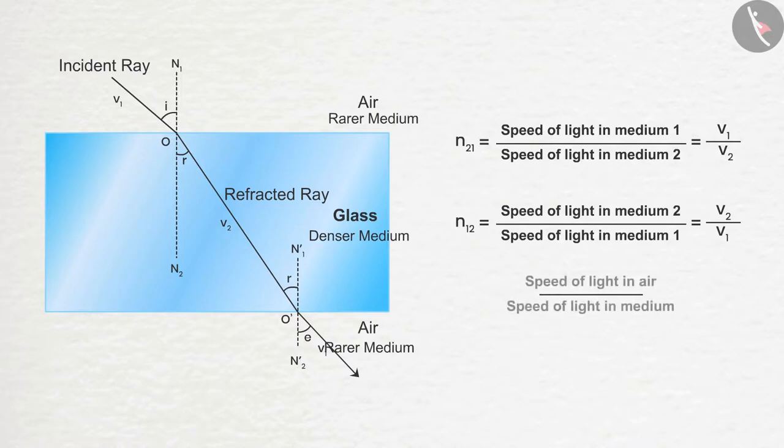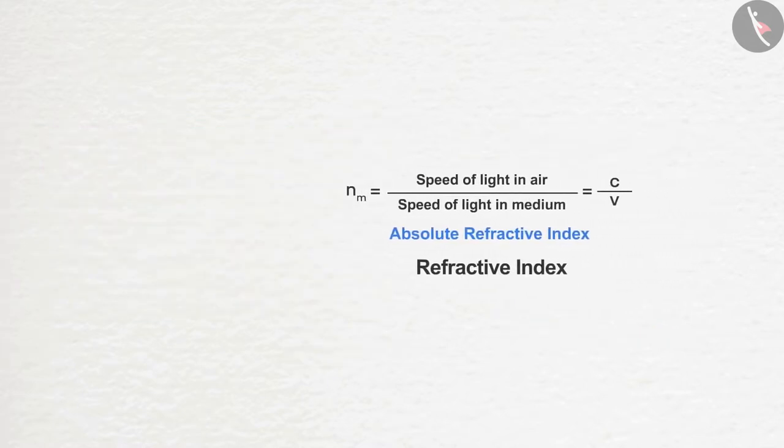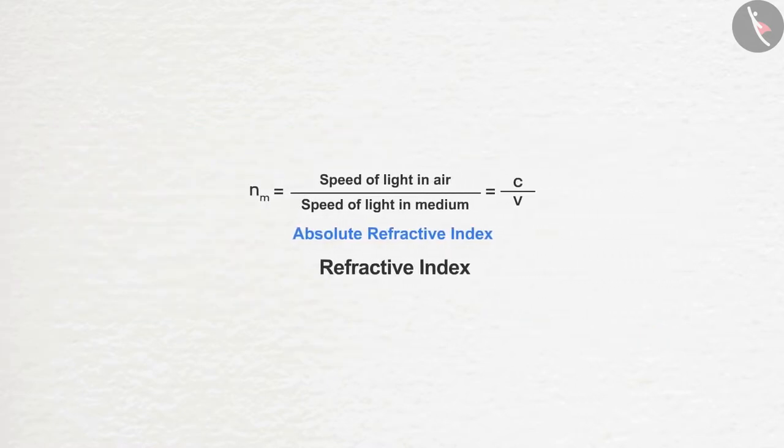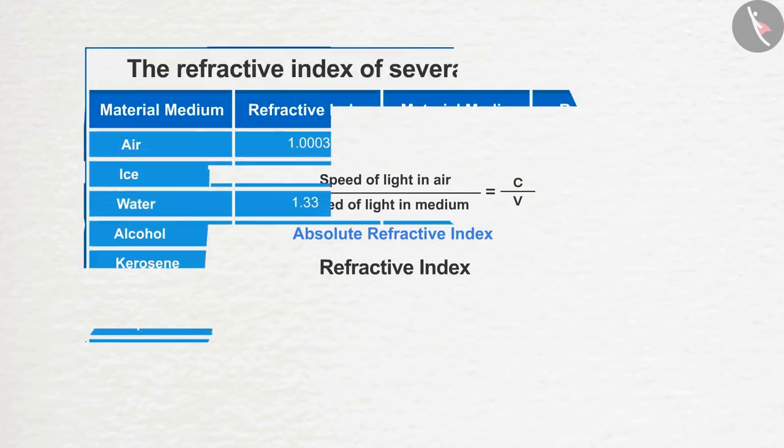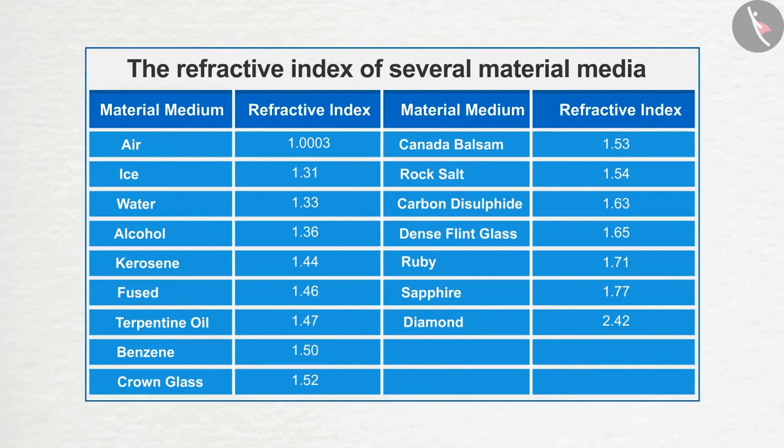If medium 1 is air or vacuum, then the refractive index is called absolute refractive index. Absolute refractive index is simply known as refractive index only. Vacuum and air are considered as rarer mediums. Some of the other materials are considered as denser mediums. You can check the refractive index of several material media with respect to air.